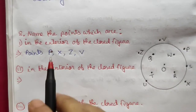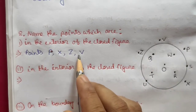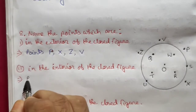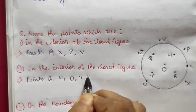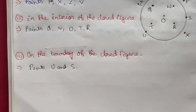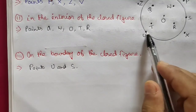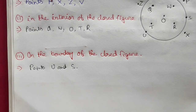The last question: name the points on the exterior, interior, and boundary of the figure. Points on the exterior — outside — are P, X, and Z. Points in the interior — inside — are Q, W, O, and T. Points on the boundary of the figure are U and S. This concludes Chapter 9: Basic Geometrical Ideas. If you have any doubts, ask in the comment section.